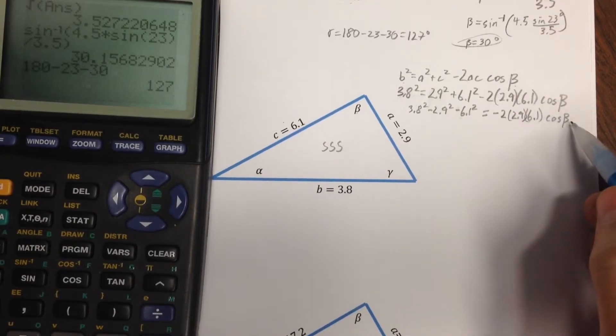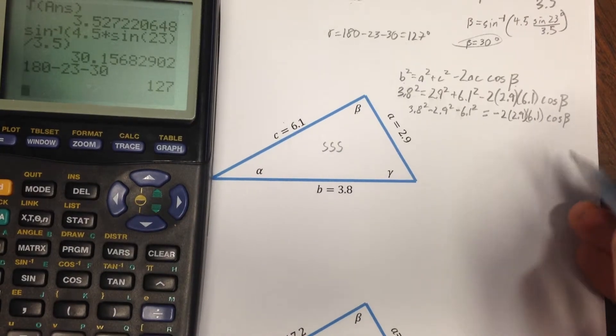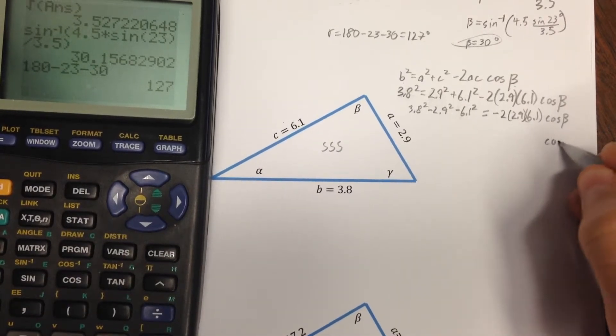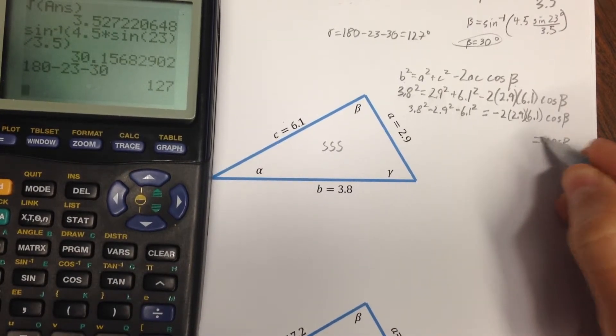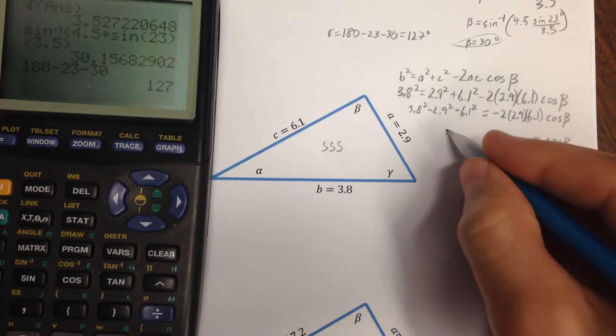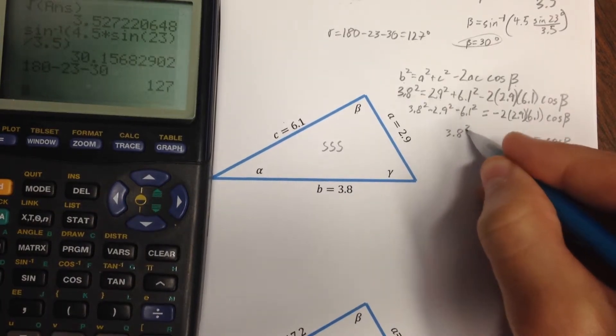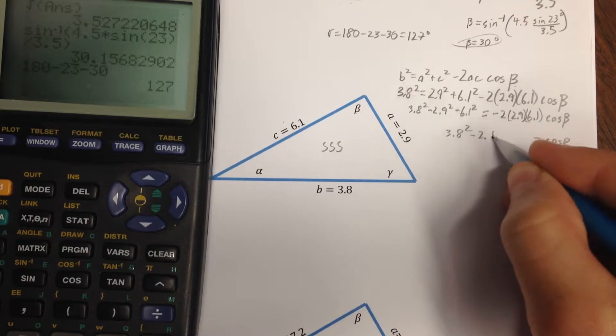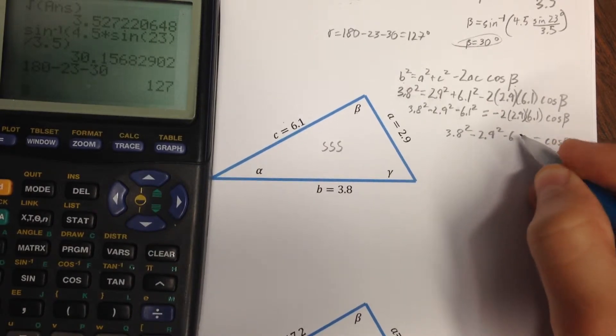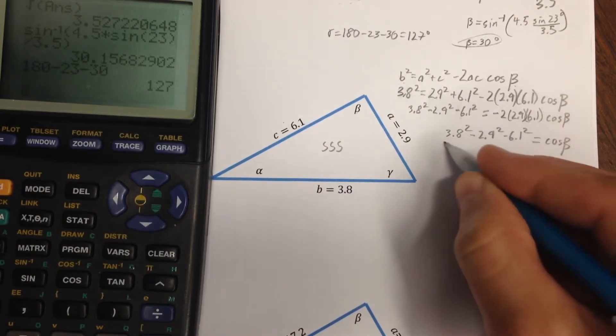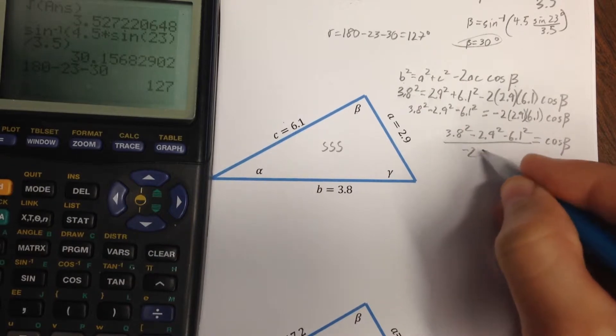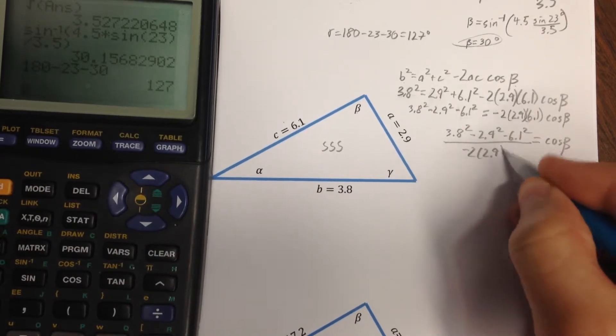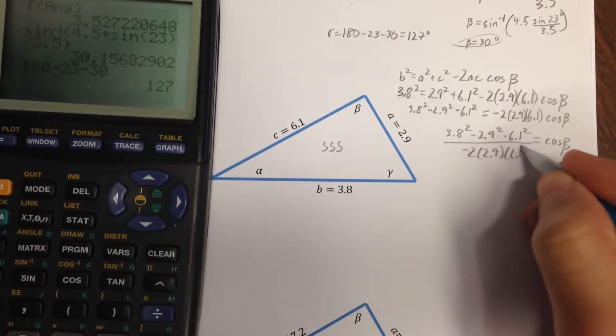equals negative 2 times 2.9 times 6.1 cosine beta. Now, I'm going to divide all the things that are multiplied times cosine beta to the other side, cosine beta. Some people will actually plug these into their calculator and approximate to start with. I'll use the calculator more or less just in one step. So, negative 2 times 2.9 times 6.1.